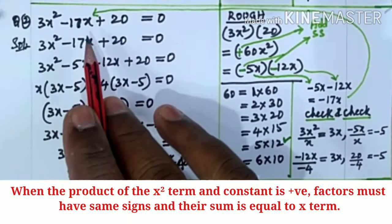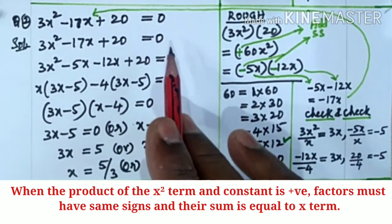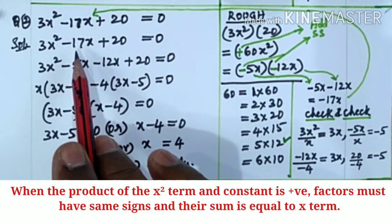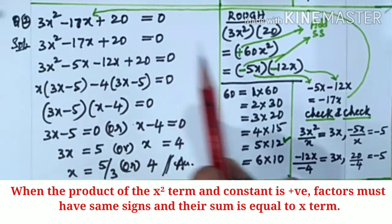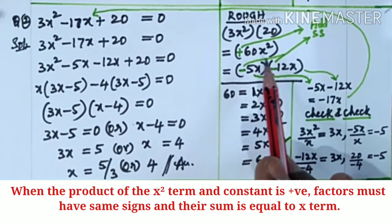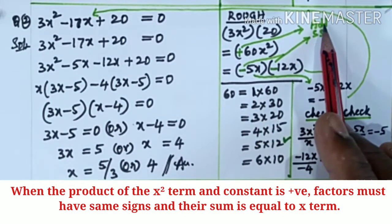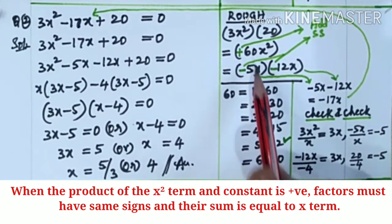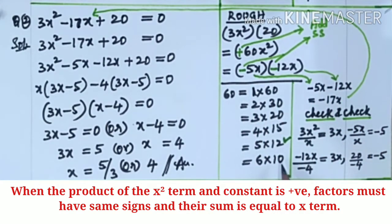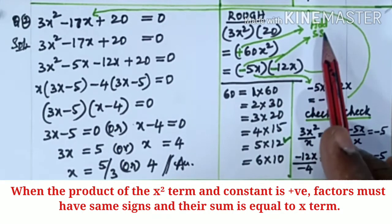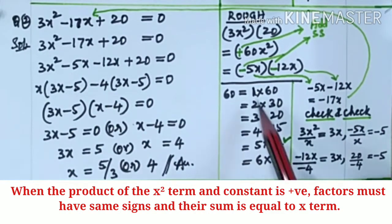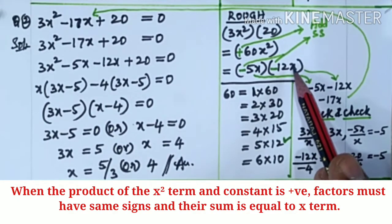3x² - 17x + 20 = 0. Here these two are positive and this is negative. 3x² into 20 is plus 60x². Here we have plus, so addition and same signs. 60 can be written as factors; we have to add the factors and get 17. So 5 and 12: we have to take 5x and 12x.